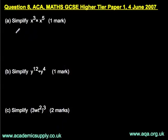We're looking at simplifying x to the power of 3 times — that is a multiply sign — x to the power of 5. So let's look at this question.